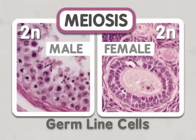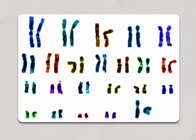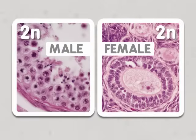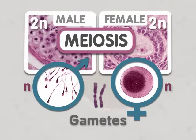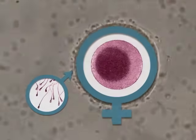In diploid organisms, germline cells have two copies of each chromosome. Germline cells undergo meiosis to produce haploid gametes which only have one copy of each chromosome. These haploid gametes fuse to form a diploid embryo that grows into the adult.